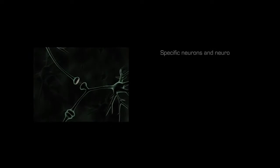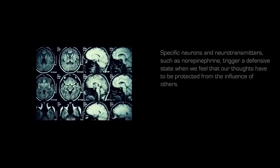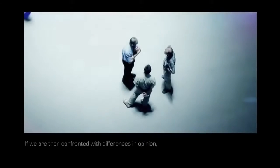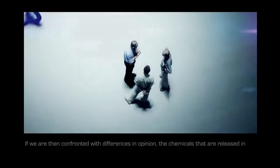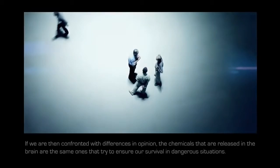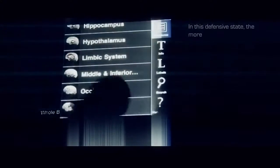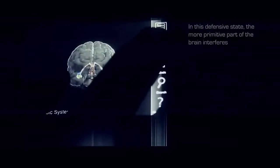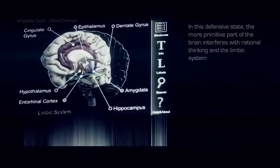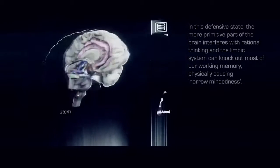Specific neurons and neurotransmitters, such as norepinephrine, trigger a defensive state when we feel that our thoughts have to be protected from the influence of others. If we are then confronted with differences in opinion, the chemicals that are released in the brain are the same ones that try to ensure our survival in dangerous situations. In this defensive state, the more primitive part of the brain interferes with rational thinking and the limbic system can knock out most of our working memory, physically causing narrow-mindedness.